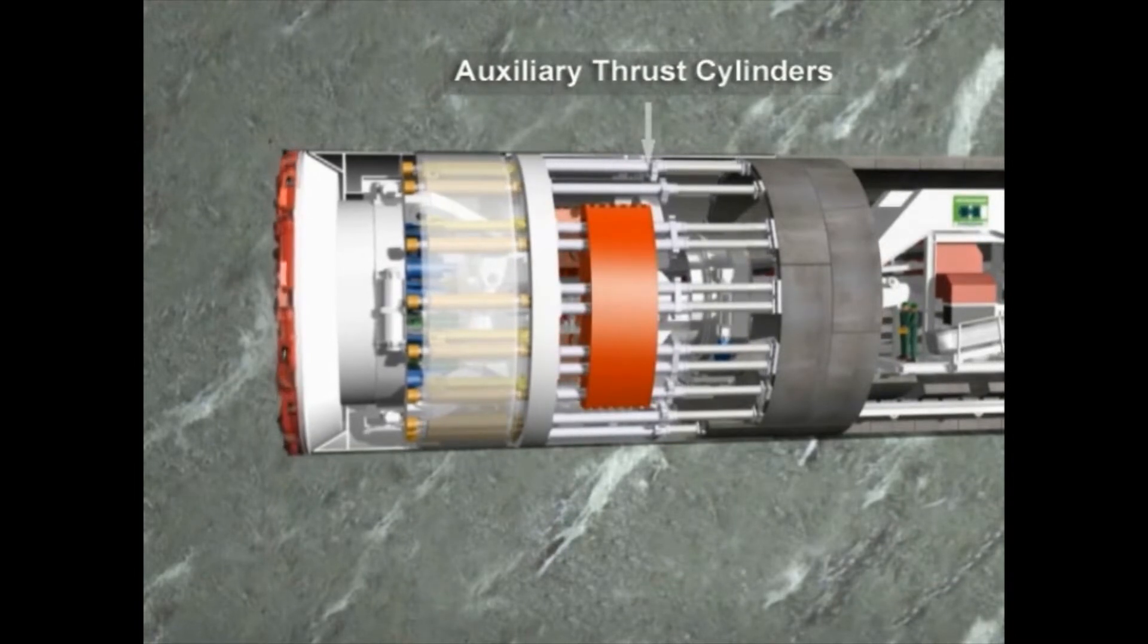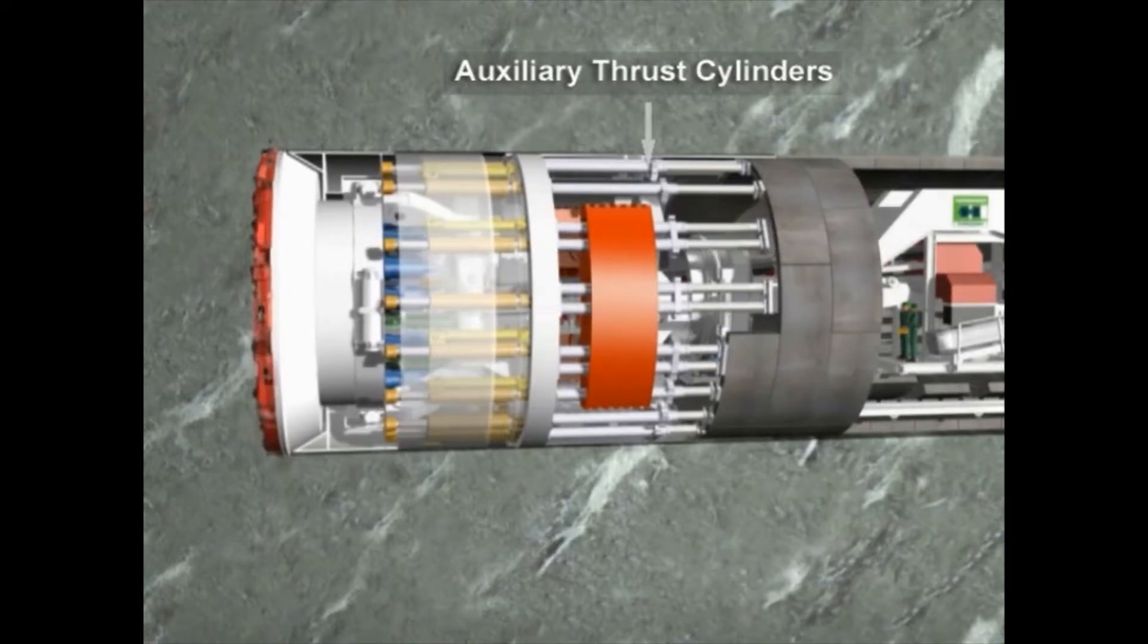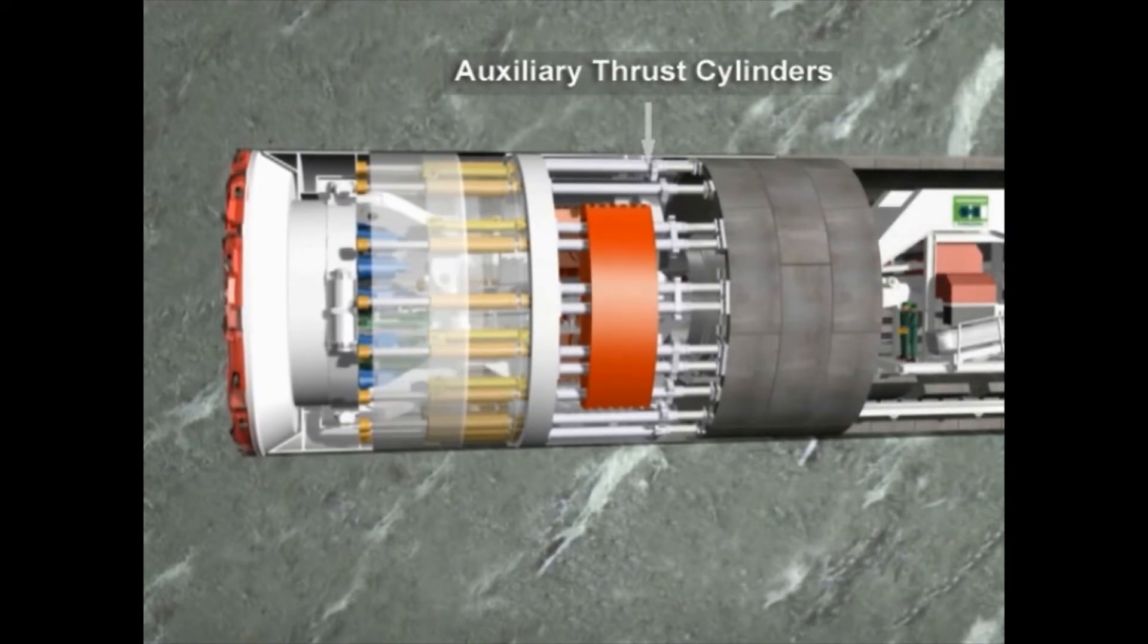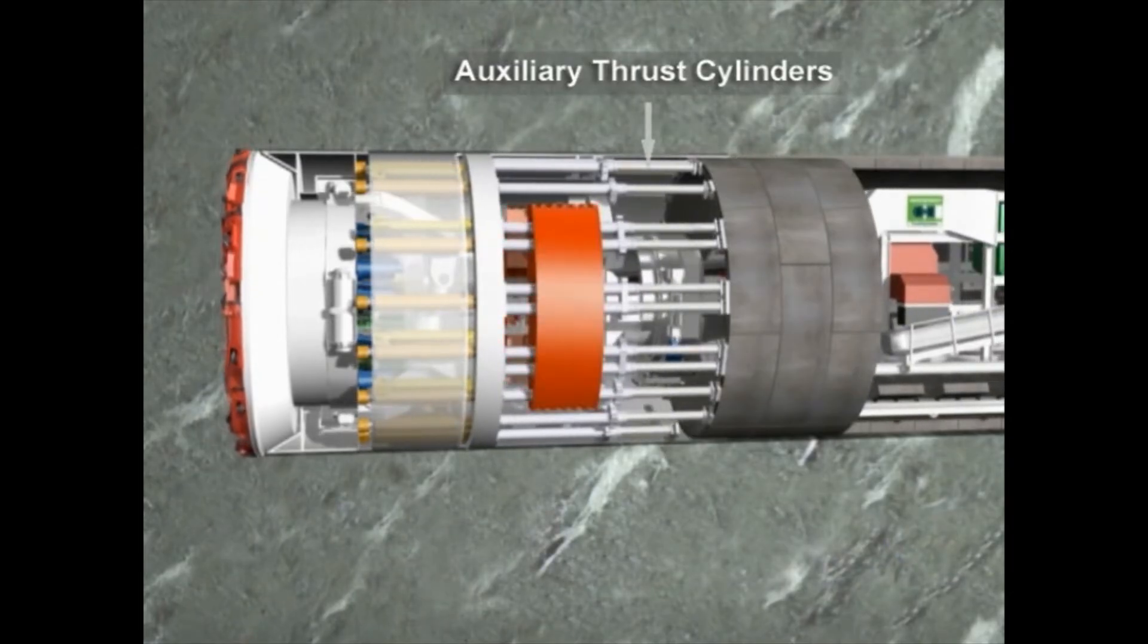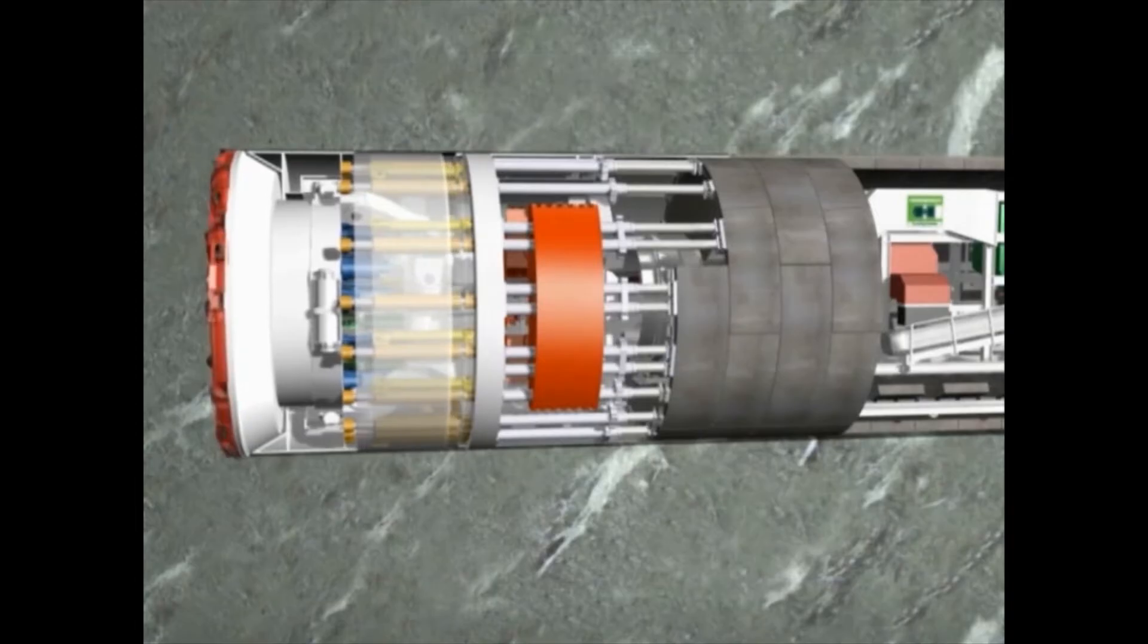Thereby, the auxiliary thrust cylinders only serve for the fixation of the segments, during the segment installation as well as during the re-grip cycle when the rear section of the machine, including the gripper section and the tail skin, is pushed forward.